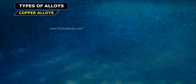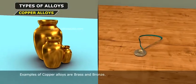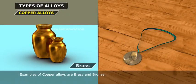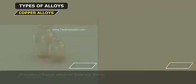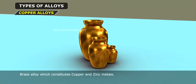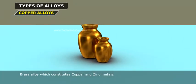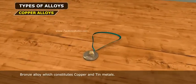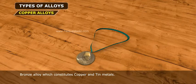Copper Alloys. Examples of Copper Alloys are Brass and Bronze. Brass Alloy constitutes Copper and Zinc metals. Bronze Alloy constitutes Copper and Tin metals.